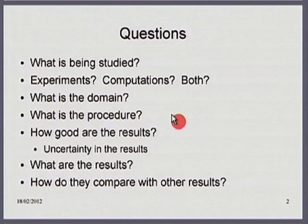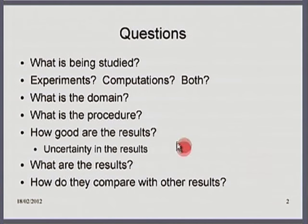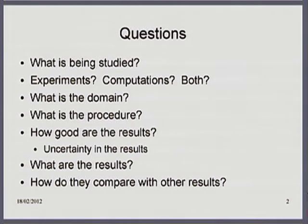We are in session 1B, looking at conference papers in the engineering domain. After Professor Kannan's part, I am going to talk essentially about graphics. We already know that the questions a reviewer or reader of a paper looks at are: what is being studied, are there experiments or computations or both, what is the domain of interest, what is the procedure, how good are the results, experimental uncertainties, and what are the actual results and how do they compare with other work by the same or a different team.